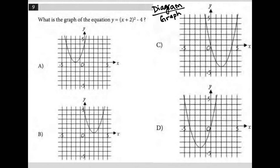What does this question say? It says: what is the graph of the equation y equals x plus 2 squared minus 4? We can tell by looking at the graphs that this equation must graph as a parabola — specifically, an upward-facing or upward-opening parabola.